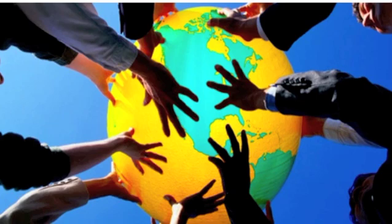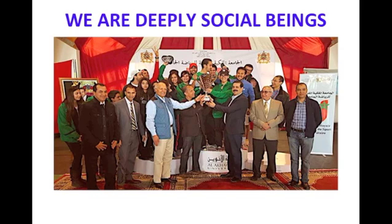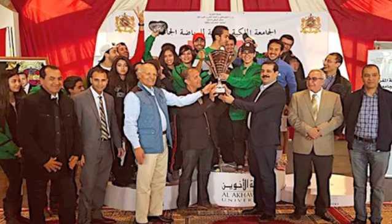Welcome back. This brings me to something else we need to do together. It's part of cultivating our collective intelligence. And it's related to what scientists call our social brain. We are deeply social beings. Our brains have grown to four times the size of our ancestors' brains three and a half million years ago. And it's our social capacity for understanding, communicating, and cooperating with each other, which has driven this growth.